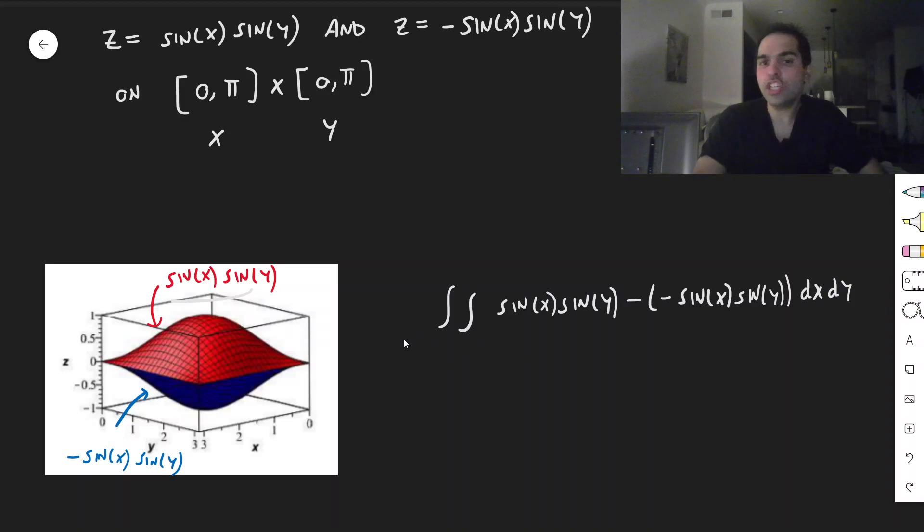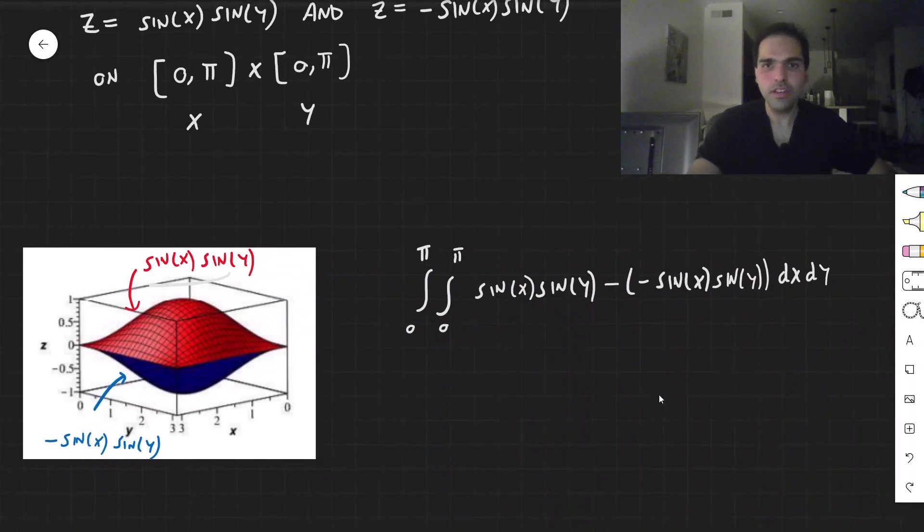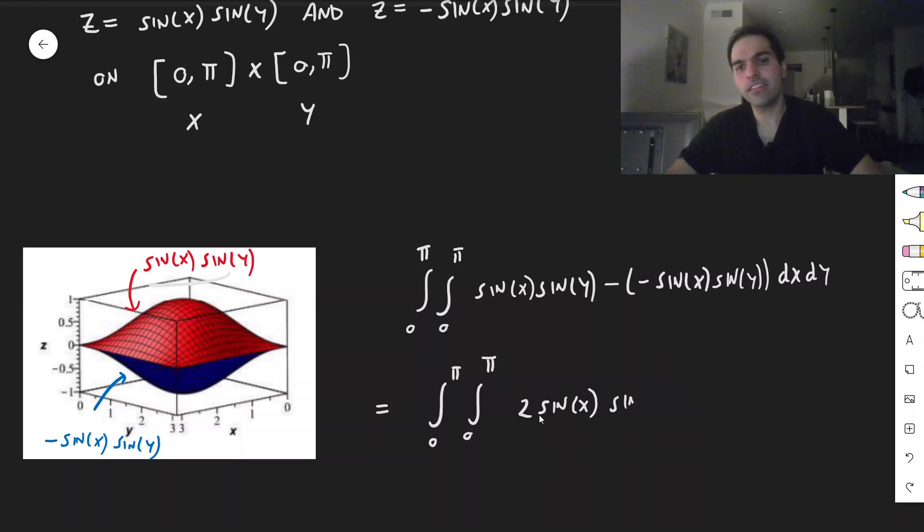And the question is, what are the end points? Well, notice, x is between zero and π, and y is between zero and π. And so, all we need to do is evaluate this double integral. So, this becomes a double integral from zero to π and zero to π. This simplifies quite nicely. We get two sine of x sine of y dx dy.